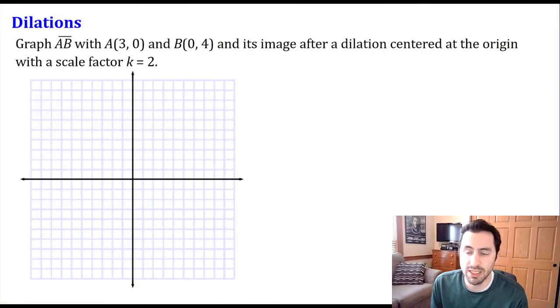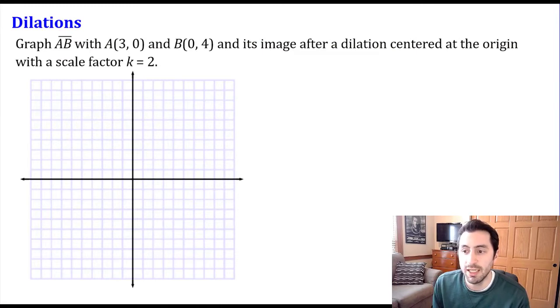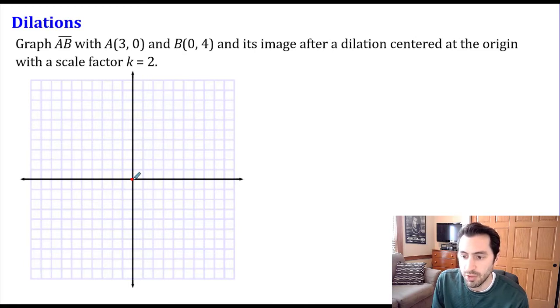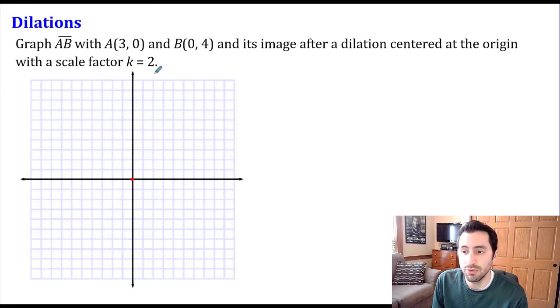We also need a scale factor. The scale factor is going to tell us how much bigger or how much smaller our shape is going to get. For our first example, we're going to graph segment AB with A at (3, 0) and B at (0, 4), and find its image after a dilation centered at the origin with a scale factor k = 2. We tend to use the variable k when talking about a scale factor.